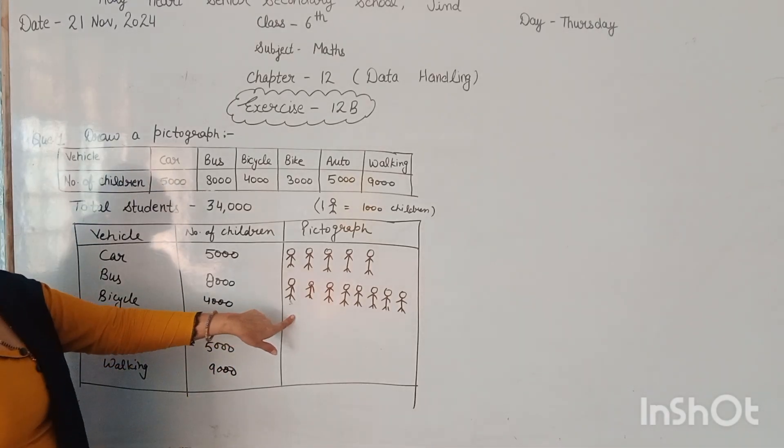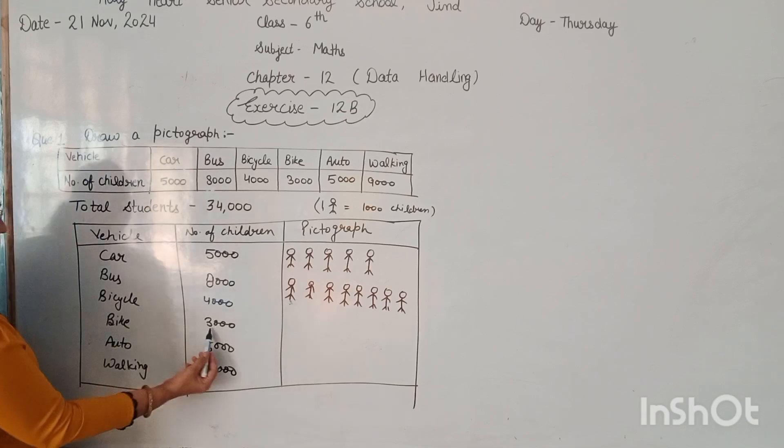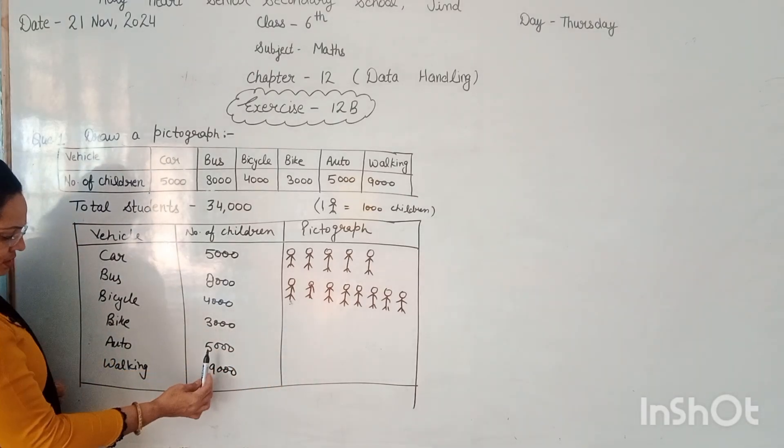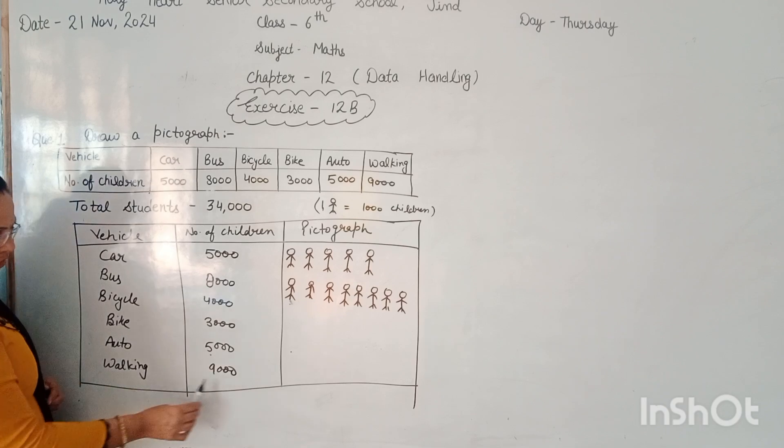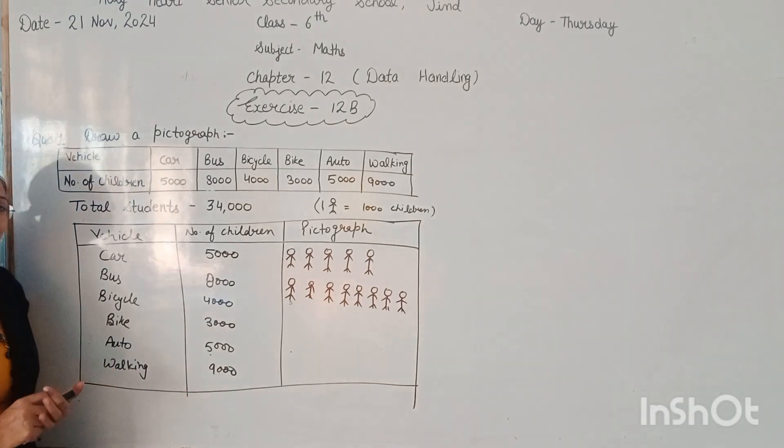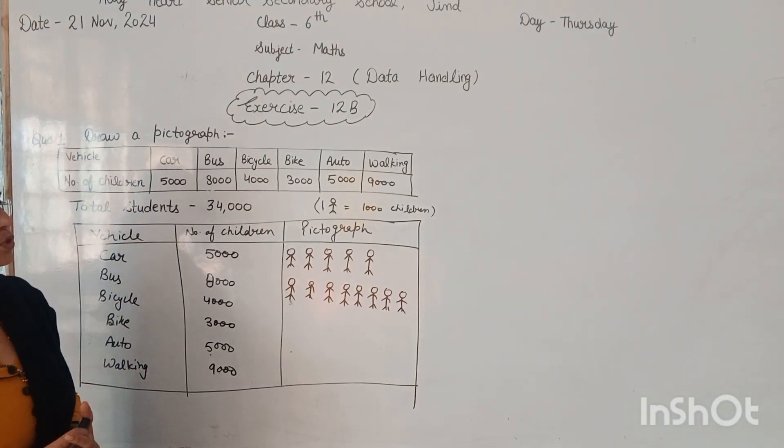So for bicycle, here we apply 4 symbols, for bike, here we apply 3 symbols, for auto, 5 symbols, and walking 9,000, that is 9 symbols. I hope you all understand this question.